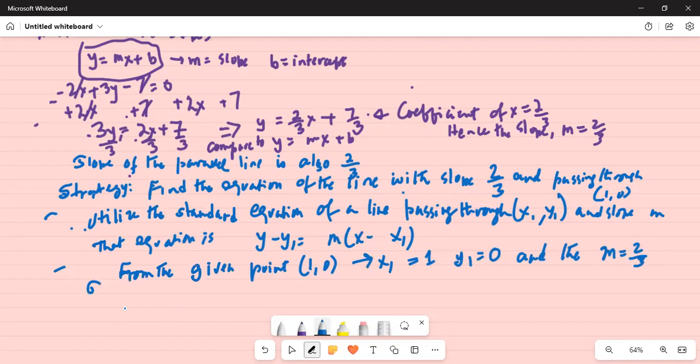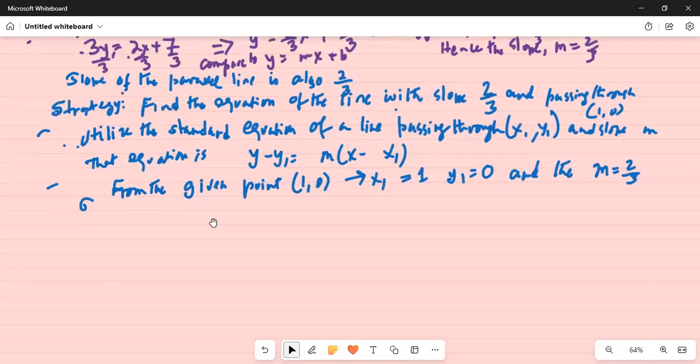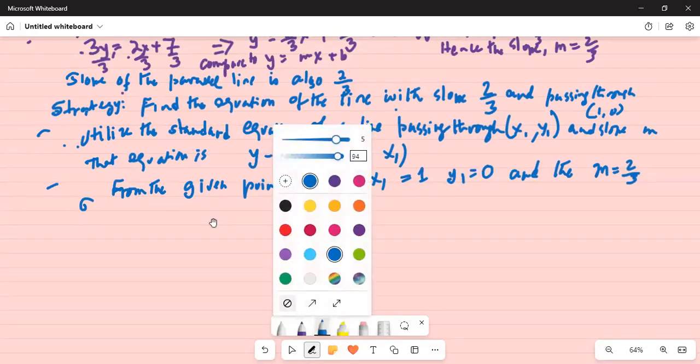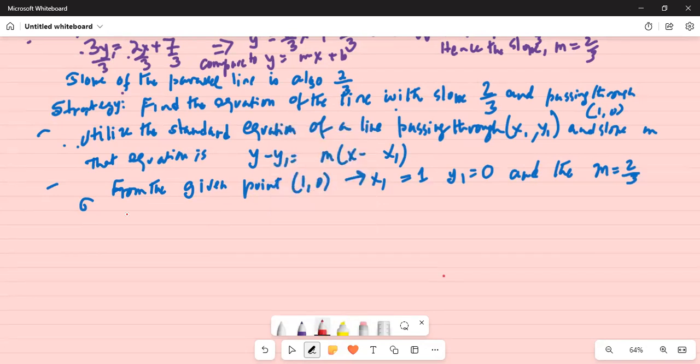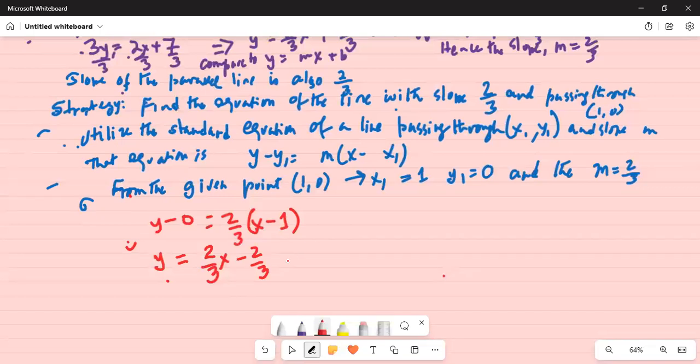We substitute these values in the equation and get y-0=(2/3)(x-1). Finally, I can write y=(2/3)x-(2/3). This is of the form y=mx+b, where m is 2/3 and b is -2/3.